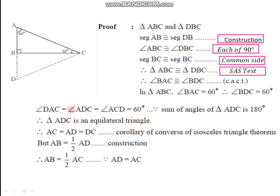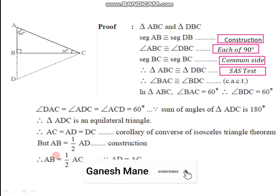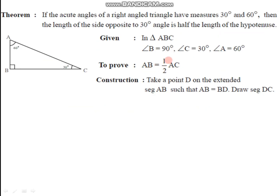Since all three angles of triangle ADC each measure 60 degrees, it is an equilateral triangle. For an equilateral triangle, all sides are congruent, so AC is congruent to AD is congruent to DC. We constructed AB and BD to be congruent, so the length of segment AB must be half of segment AD. Therefore AB equals one-half of AD. Since AC equals AD, we can substitute to get AB equals one-half of AC, which is exactly the first part we needed to prove.